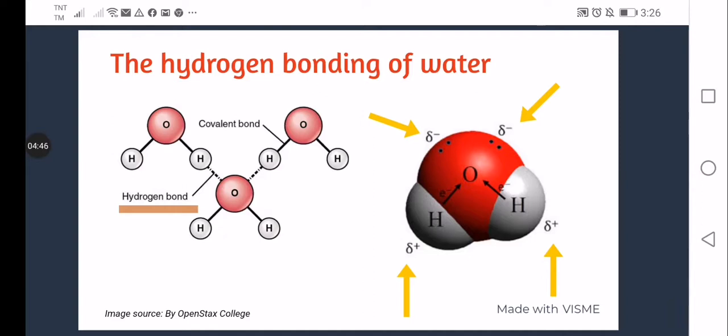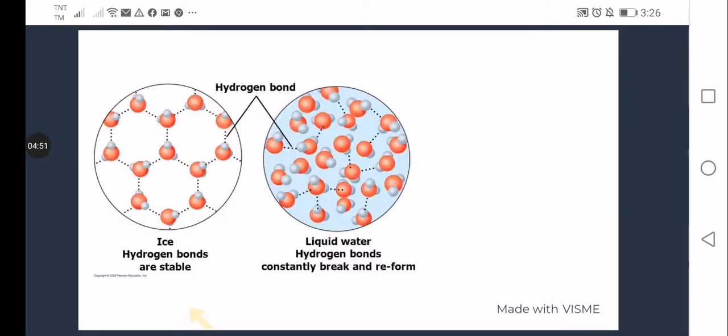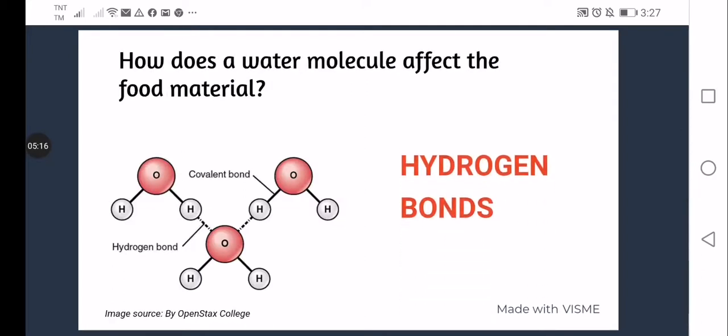So let's take a look at the hydrogen bonds formation in water and in ice. Unlike the hydrogen bonds in liquid water, as you can see in the figure, hydrogen bonds in ice are stable and more ordered forming a hexagonal shape with a hole in the middle making ice less dense. That is why ice floats in water. So now, how exactly do water molecules affect the food material? The answer can be attributed to the hydrogen bonds.